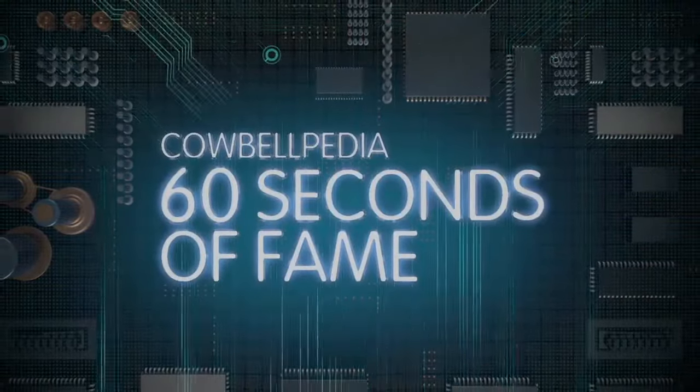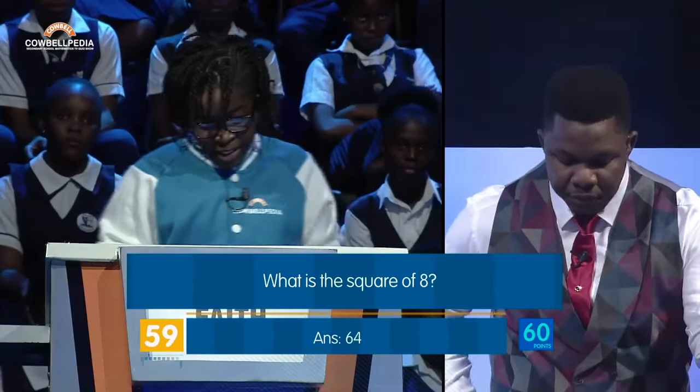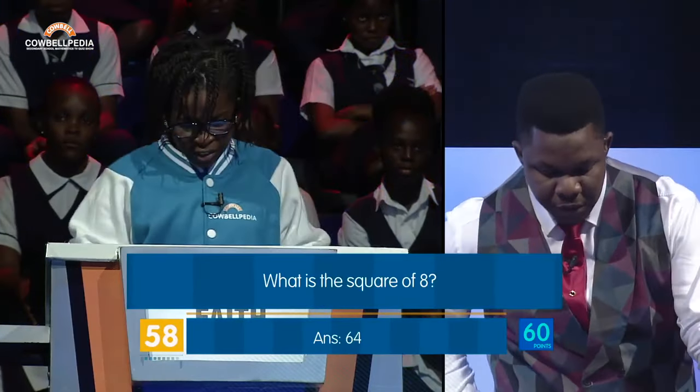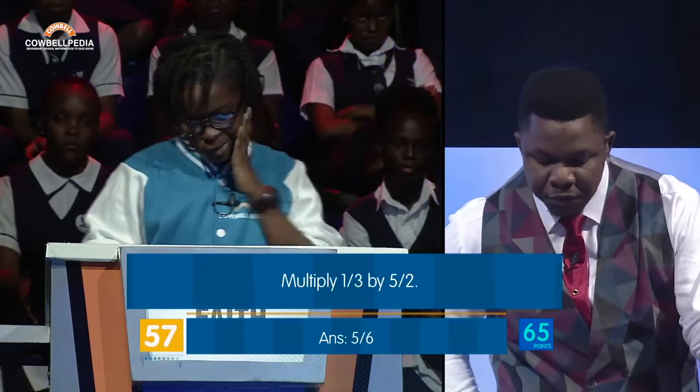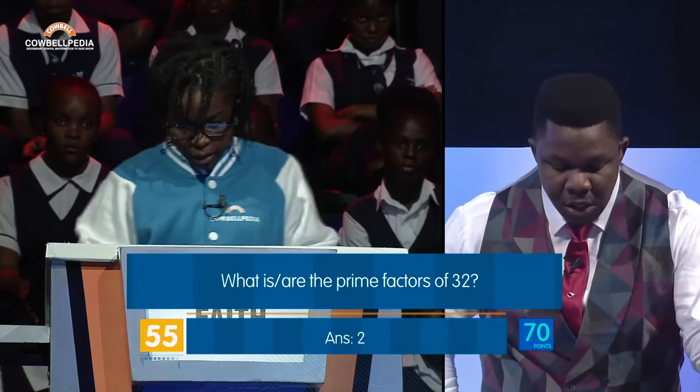Carl Belpedia, 60 seconds of fame starts now. What is the square of 20? 64. Correct. Multiply 1 over 3 by 5. 5 over 6. Correct.